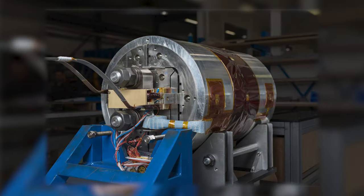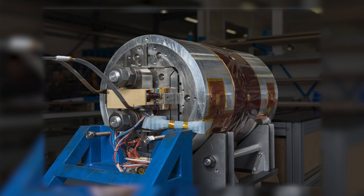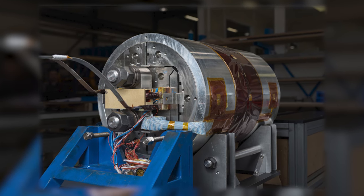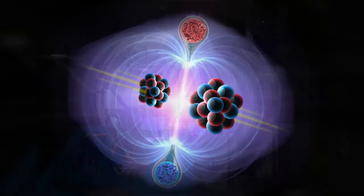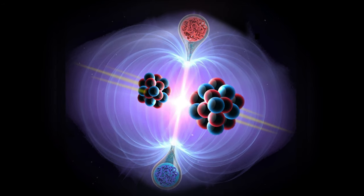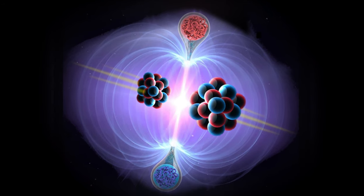16 Tesla dipoles are going to be needed to steer the average 50 TEV beam over a 100 kilometer tunnel. This magnetic field is twice the strength of that found in the Large Hadron Collider.